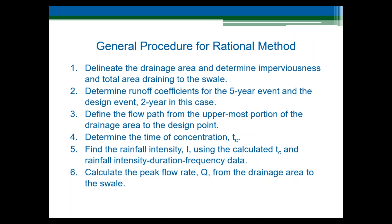After we know the drainage area, the longest flow path, and the imperviousness, we can calculate the time of concentration. To calculate the two-year peak flow rate, we also need the rainfall intensity for a duration equal to the time of concentration for a two-year return period. The final step is to multiply the runoff coefficient, intensity, and area together to determine the peak flow rate, and then do a reasonableness check on the results. It is always important to do a reasonableness check with hydrologic calculations because it's easy to make a simple error that can throw off your results.